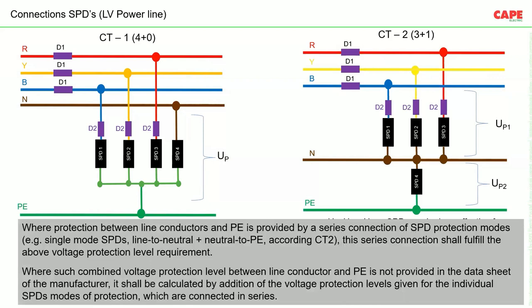Where protection between line conductors and PE is provided by a series connection of SPDs — in CT2, using single-mode SPDs line-to-neutral plus neutral-to-earth — this series connection must fulfill the required voltage protection level at the connection point, which is the impulse withstand capacity of the equipment. We must select the voltage protection level as the sum of UP1 plus UP2 plus the voltage drop across connecting wires, especially in 3+1 type connections.